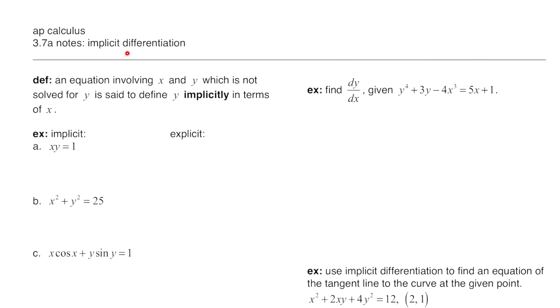In this lesson, we're going to talk about implicit differentiation. The first definition says an equation involving x and y, which is not solved for y, is said to define y implicitly in terms of x. Here's an example of an equation in implicit form, where you can see the x's and y's are mixed on the same side.